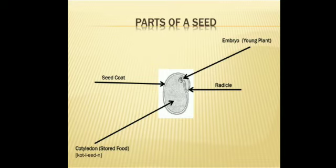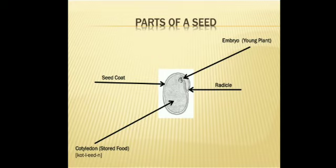Seeds having two cotyledons are called dicots. If a seed has only one cotyledon, it is called a monocot. Examples of dicots are gram, peas, beans — they have two cotyledons, that's why they are called dicots. Seeds like maize, wheat, and rice have only one cotyledon, so they are called monocots.